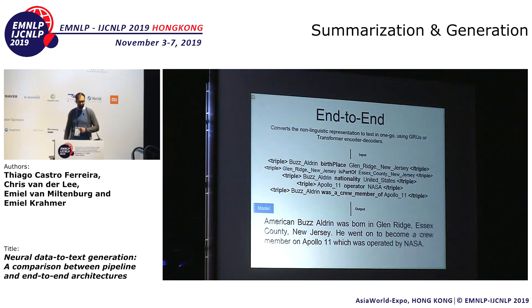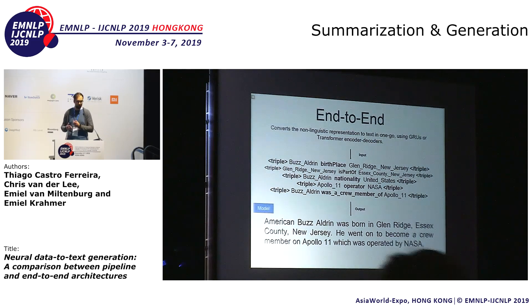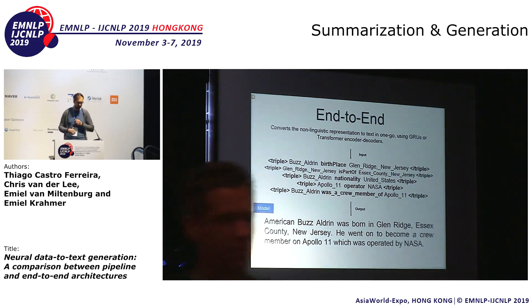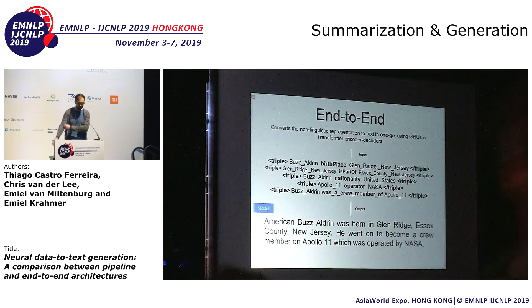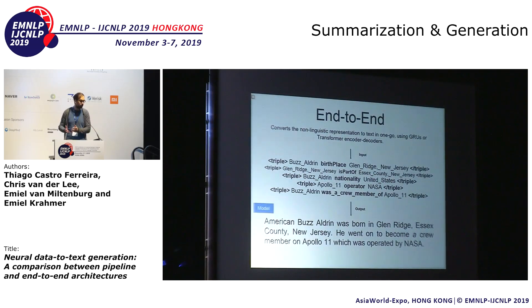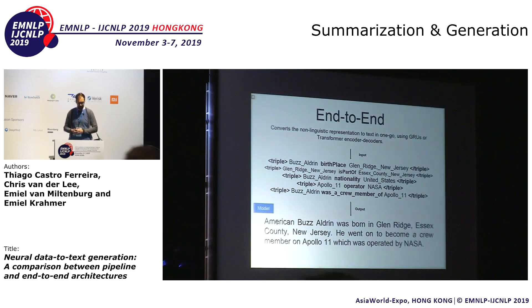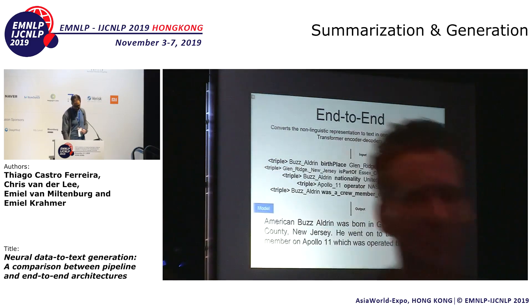End-to-end is a lot quicker. We also used Nematus for this one. We also tried gated recurrent units and a transformer, but we just used the unordered triple information as input and tried to get full textual realizations as outputs.